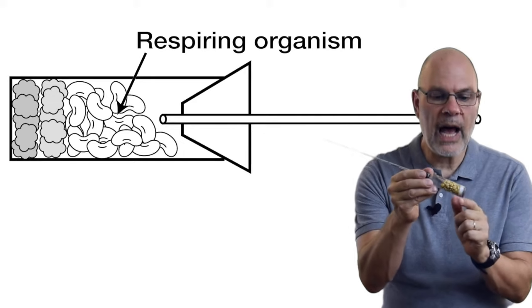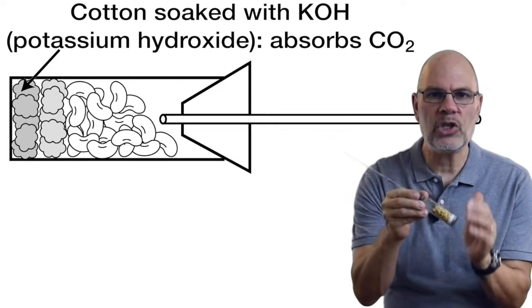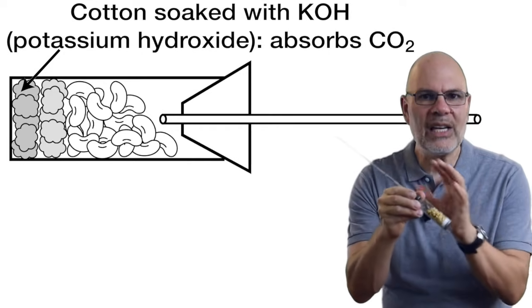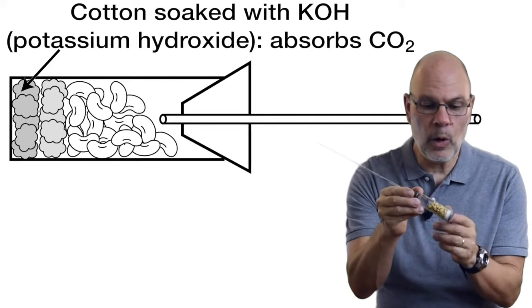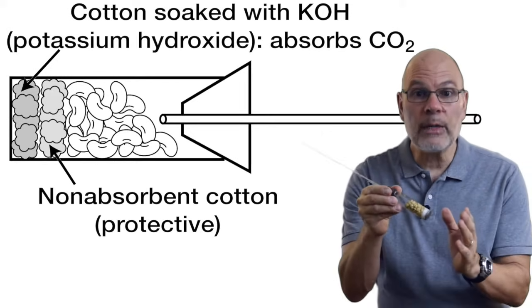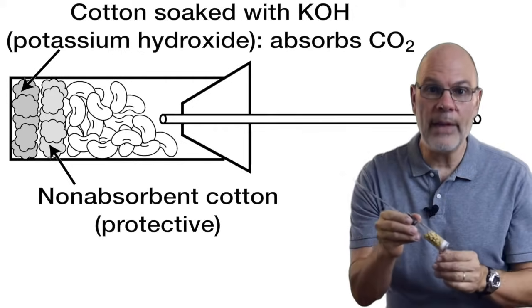One is absorbent cotton. We're going to soak that with KOH, a strong base. And what that does is it chemically absorbs all the carbon dioxide that's produced by the respiring organism. And then there's a layer of non-absorbent cotton, whose function is to protect our respiring organism from that strong base.